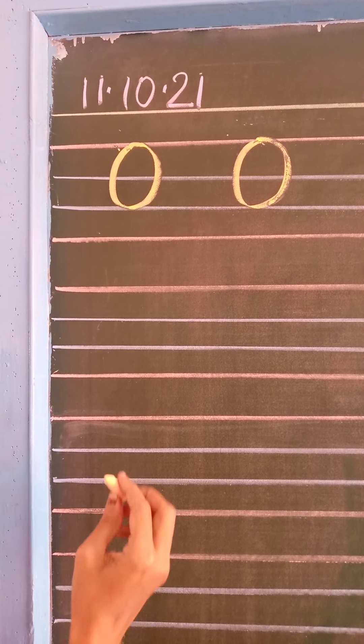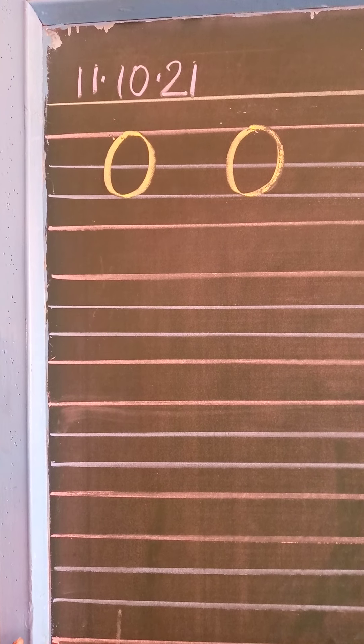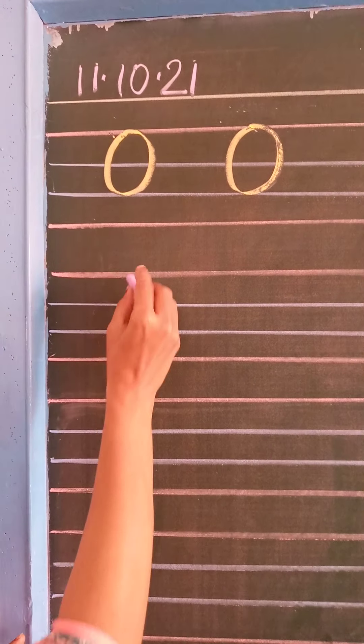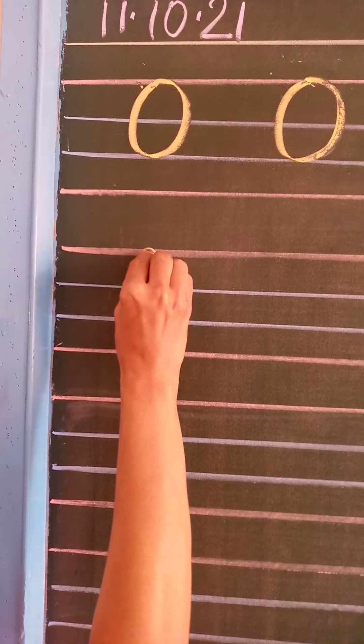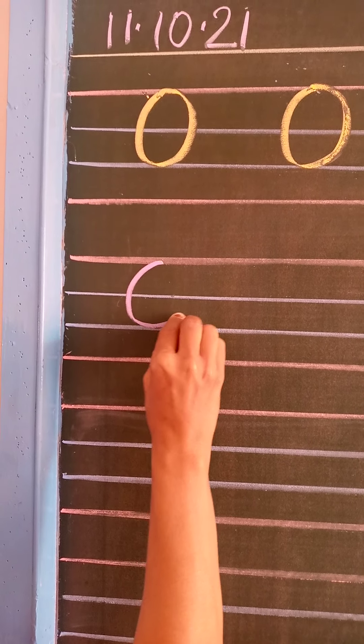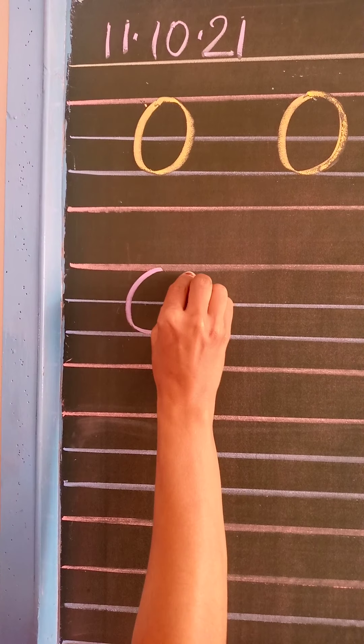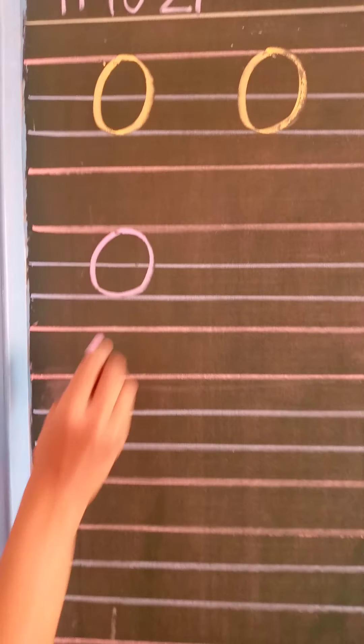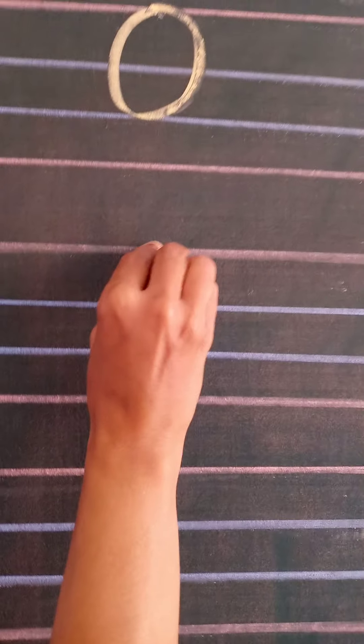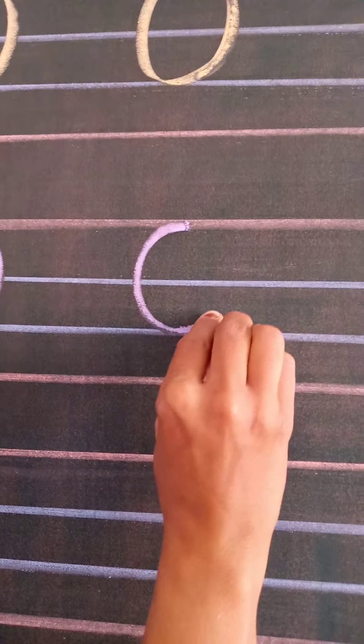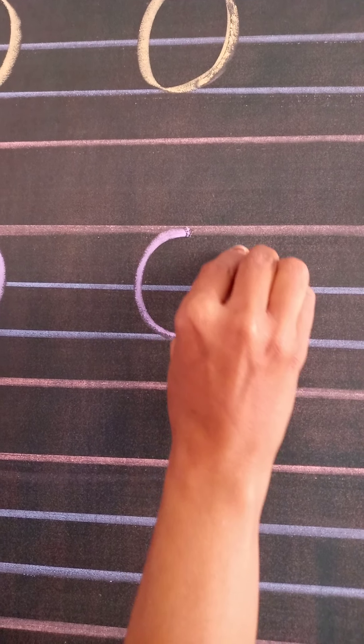Look here, my dear students. First of all, for O, from the red line, make a curve, come down slowly, go up and touch the red line again. This is letter O. Again, look here — from the red line, come down till the second blue line, go up till the red line. This is letter O.